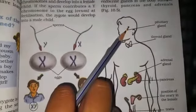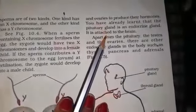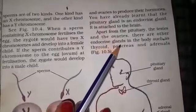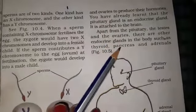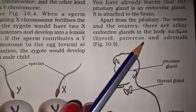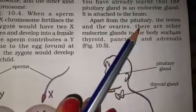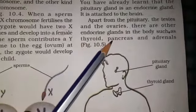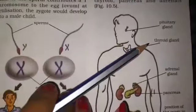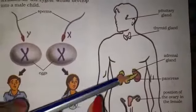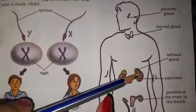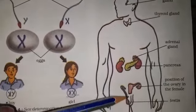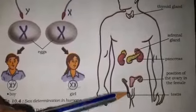Apart from the pituitary, testes, and ovaries, there are other endocrine glands in the body such as the thyroid, pancreas, and adrenals. The thyroid gland is present in your neck, the adrenal glands are above your kidneys near your lungs, the pancreas is in the abdomen, and the ovaries and testes are in their respective positions.